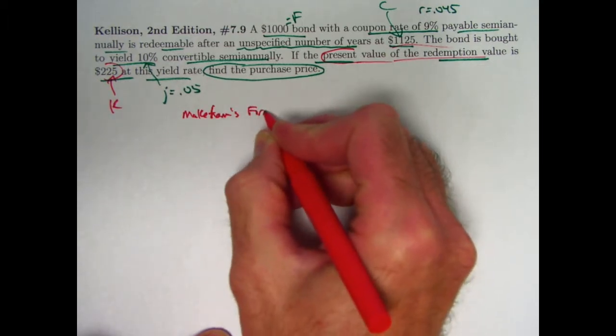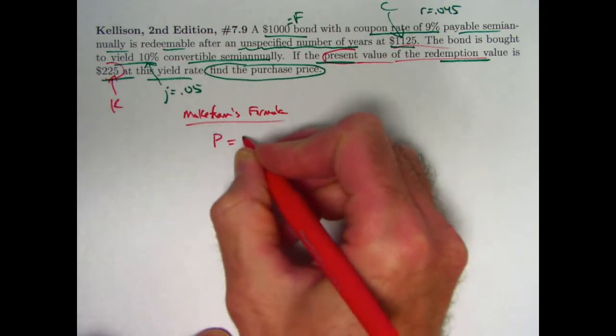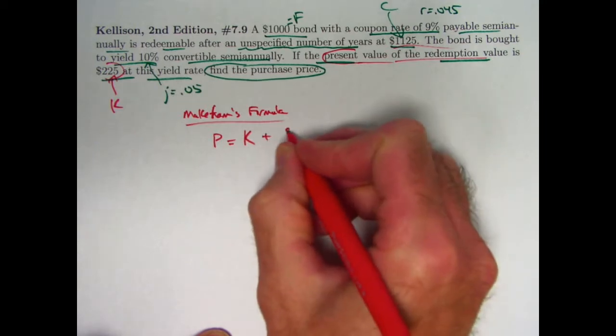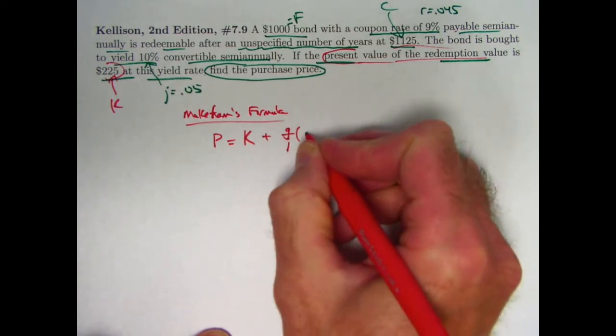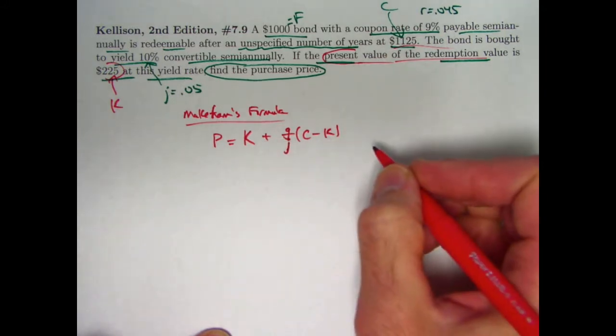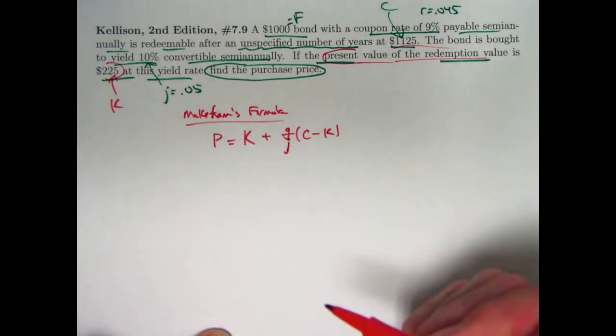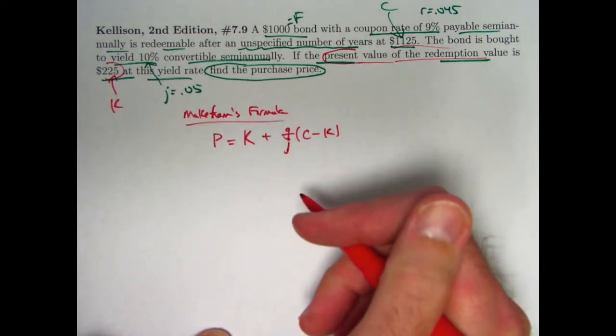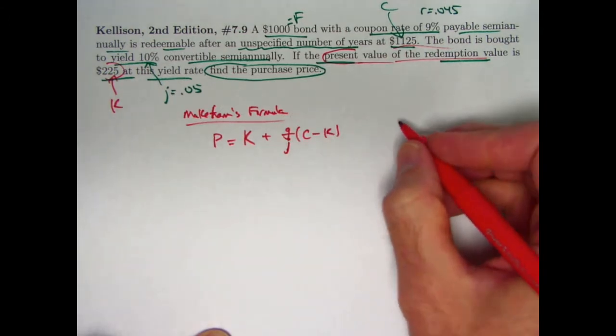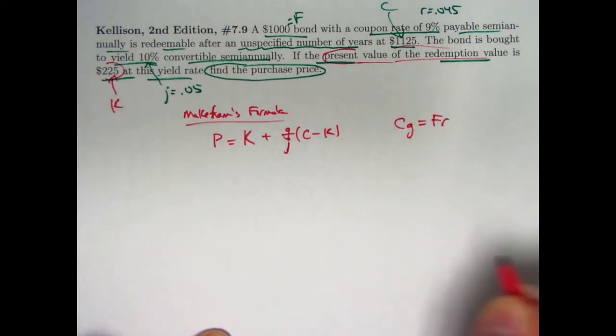Makeham's formula. It can be written as the price of the bond is K, the present value of the redemption value, plus G over J times C minus K in parentheses. Again, K is the present value of the redemption value. C is the redemption value itself. J is the effective semi-annual yield rate, or the effective periodic yield rate. What was little g? Little g was the so-called modified coupon rate. C times little g equals F times R is the coupon amount.